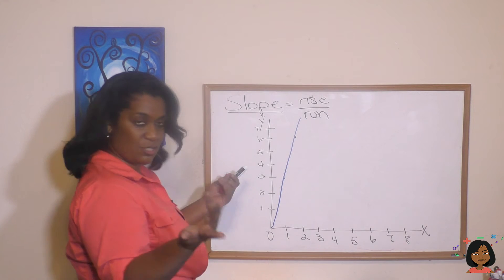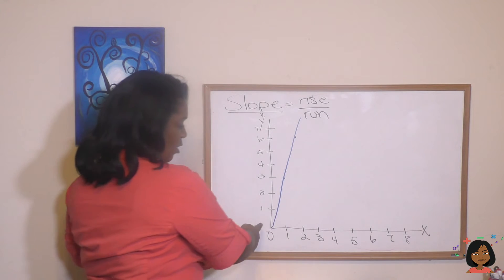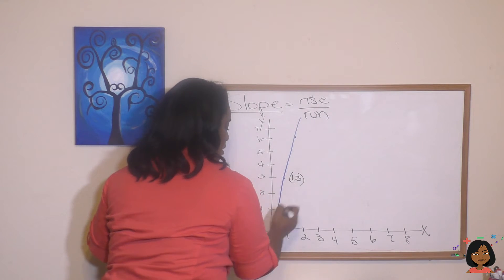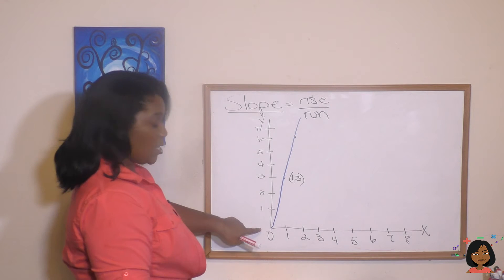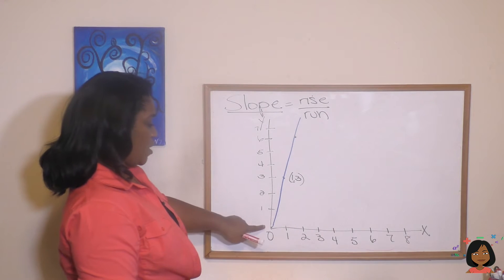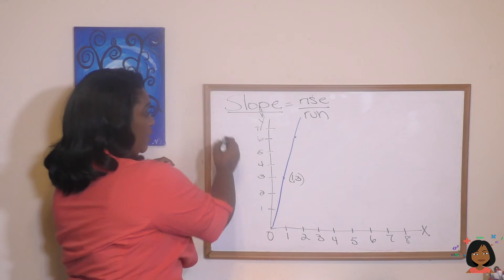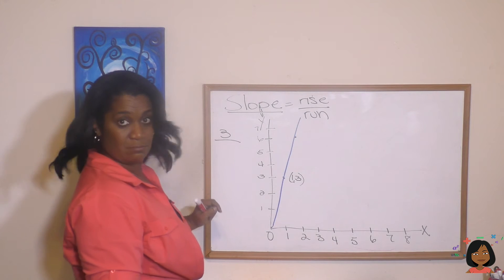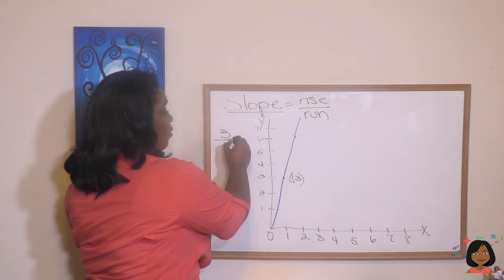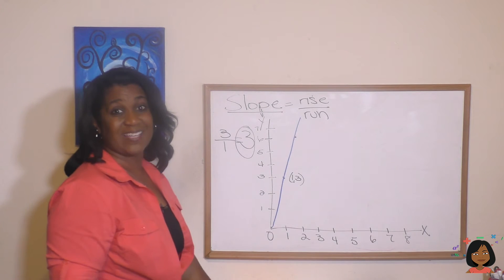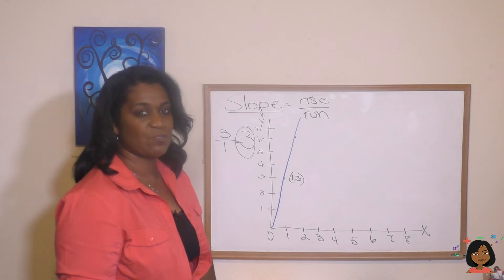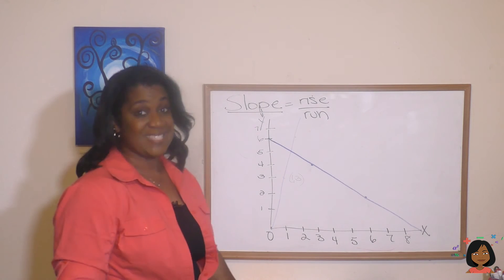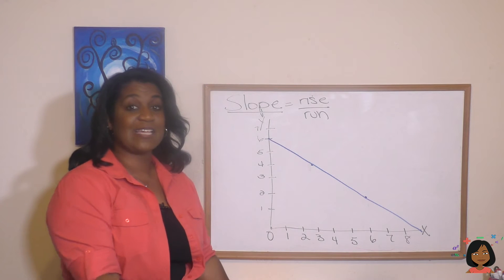Take a look at this line — let's figure out its slope. We can start at (0, 0) and go to the point (1, 3). To figure out the rise, we go up one, two, three. What is our run? We go over one. So that's three over one, which means the slope of this line is 3. That makes sense — it is steeper than the one we just had, so the slope is bigger.